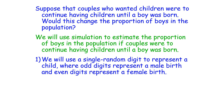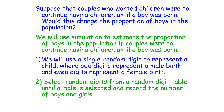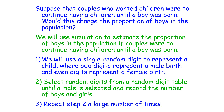We'll use a single random digit to represent a child, where an odd digit will represent a male birth and an even digit will represent a female birth. We'll select random digits from a random digit table until a male is selected, and record the number of boys and girls. We'll repeat this a large number of times.